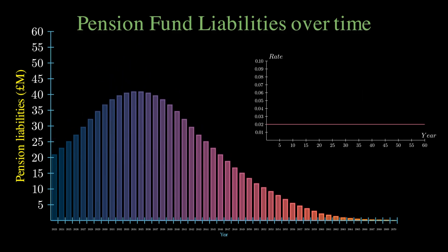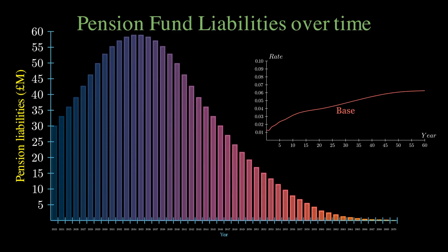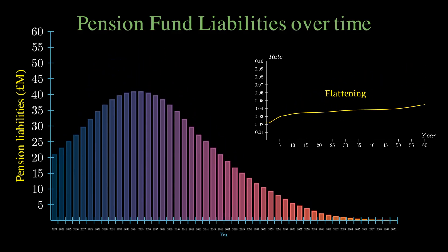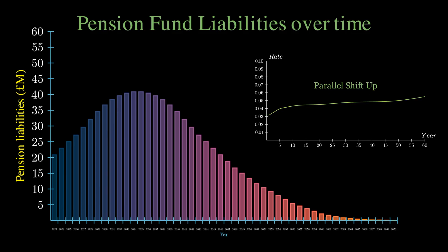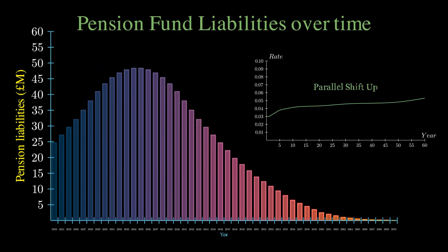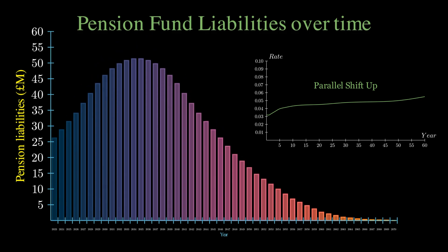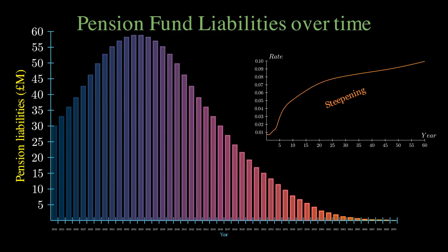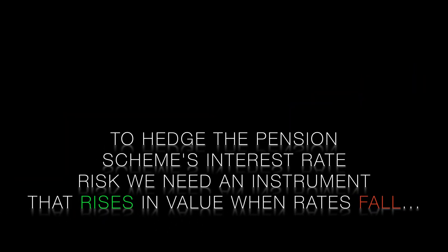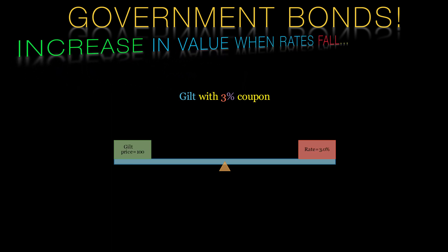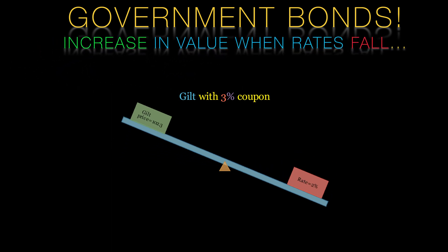The goal of the pension scheme is to invest in assets that will generate future returns. Pension trustees do not want to be exposed to fluctuations in interest rates and inflation. This is where an asset manager can advise the pension scheme and hedge the interest rate exposure. For each maturity bucket, the asset manager would like to hedge the interest rate risk. If the present value of the liability increases when interest rates fall, then they'd like a financial instrument that increases in value when rates fall. Government bonds increase in value when rates fall and decrease in value when interest rates rise.